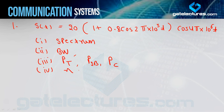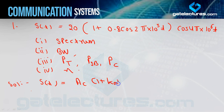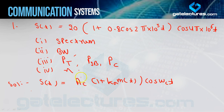Here is the AM waveform given. To draw the spectrum, first compare with the standard AM equation: AC[1 + Ka·m(t)]cos(ωc·t). Looking at the given equation, you can see that Ka·m(t) = 0.8·cos(...), which means this is single-tone modulation. So m(t) = Am·cos(ωm·t), and the equation becomes AC[1 + ma·cos(ωm·t)]cos(ωc·t), where ma is the modulation index equal to Ka·Am.